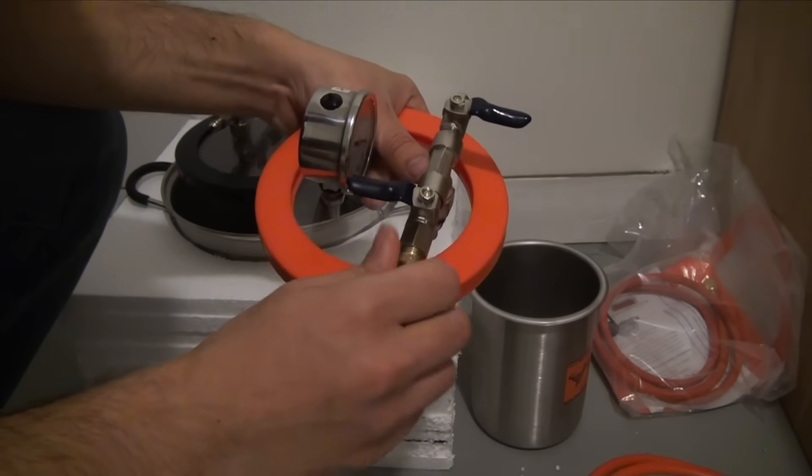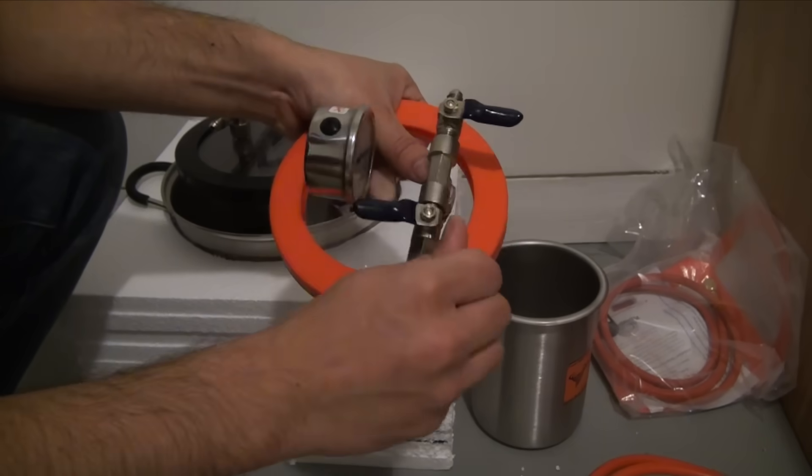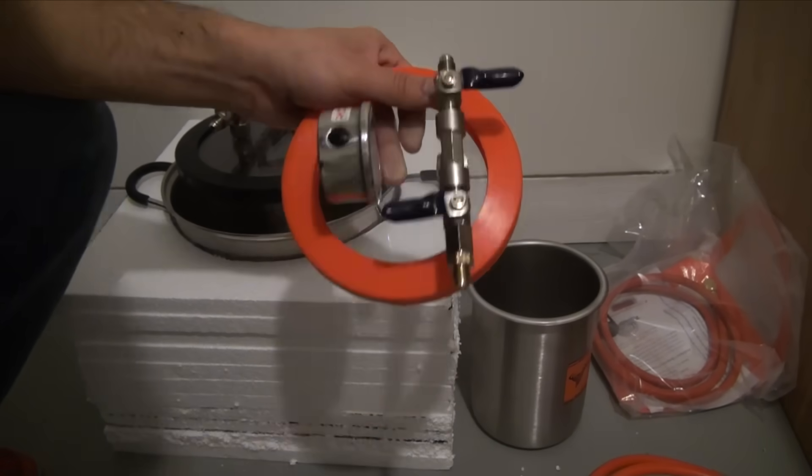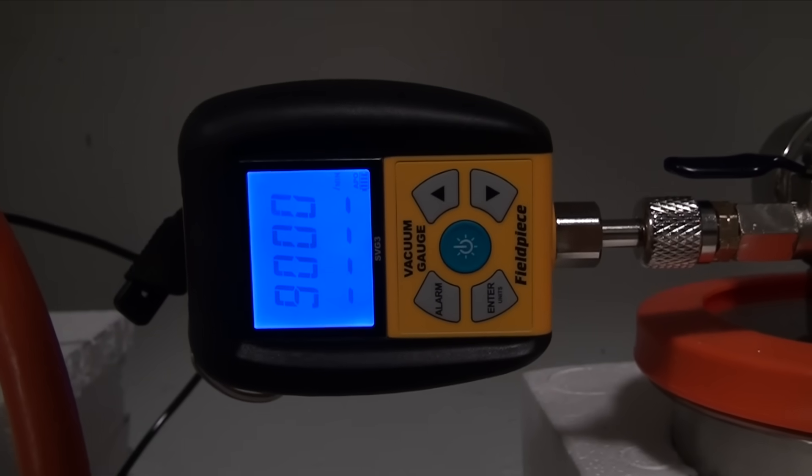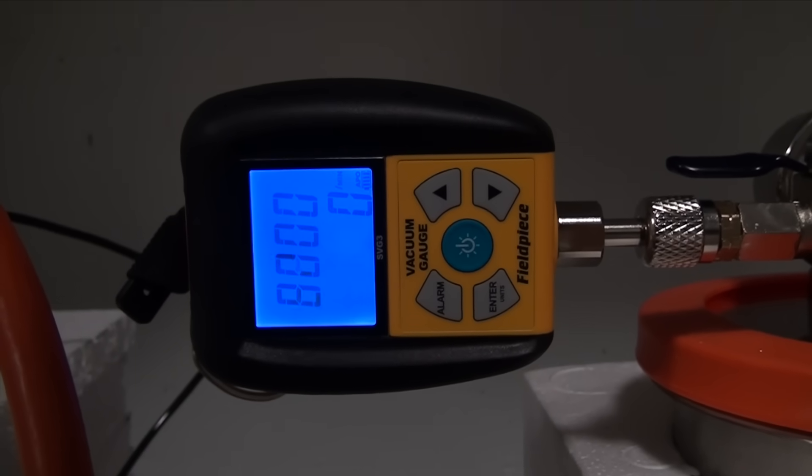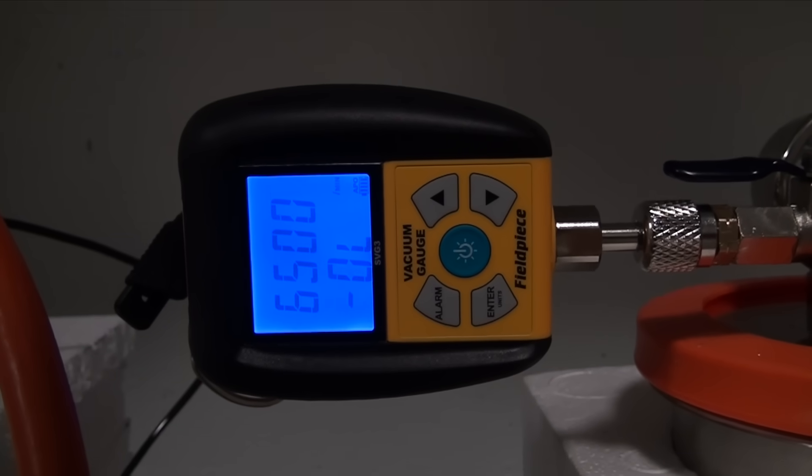To be able to attach it, I added a quarter inch union. I didn't film it, but be sure to use high grade Teflon tape to make sure this seal is good, otherwise it'll leak and screw up your pressure. The gauge I'll be using is a Fieldpiece SVG-3. It's the same model I used in the last vacuum video, for those of you wondering.